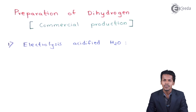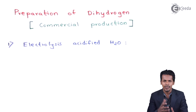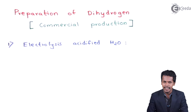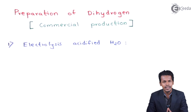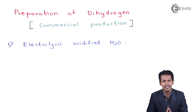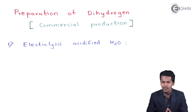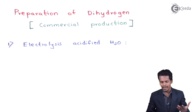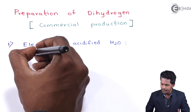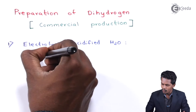For example, if we have a beaker containing acidified water at a particular concentration — using H₂SO₄ as the acid — and two electrodes of platinum or carbon are inserted, one acting as anode and one as cathode, then the reaction occurs in the following manner, which I am going to represent here. At the anode: